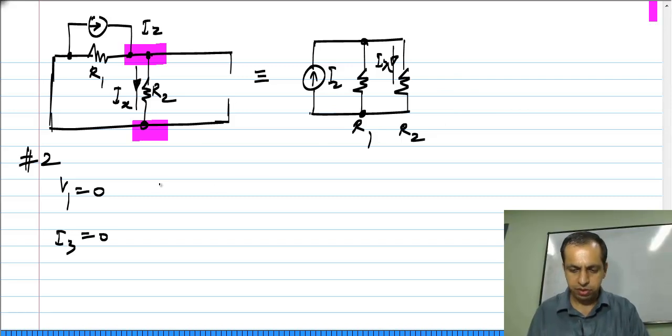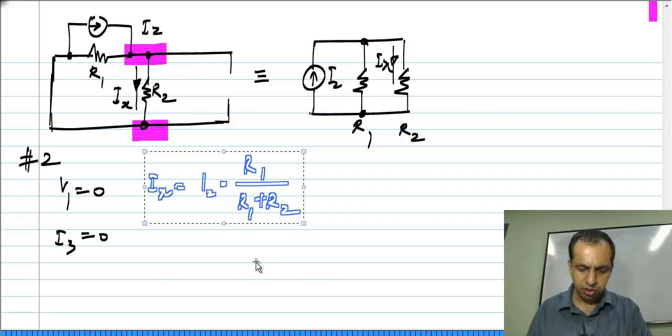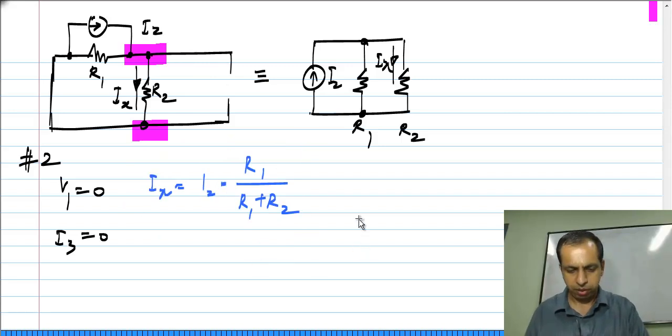In this case, Ix will be equal to I2 times R1 by R1 plus R2 from the current divider expression. In the second step, this is what I have got. And finally,